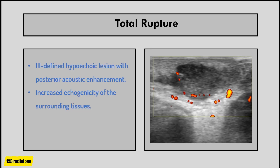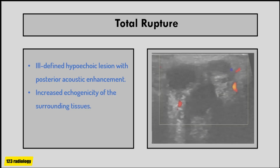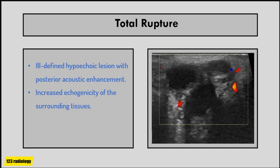A big change in the morphology of the cyst will happen if total rupture occurs. This will result in an ill-defined hypoechoic structure. Posterior acoustic enhancement is usually seen, and increased echogenicity of the surrounding tissues and peripheral vascularity may be noticed. In this case of epidermoid cyst with total rupture, there is an ill-defined hypoechoic lesion with dermal attachment and posterior acoustic enhancement, with color Doppler showing peripheral vascularity.